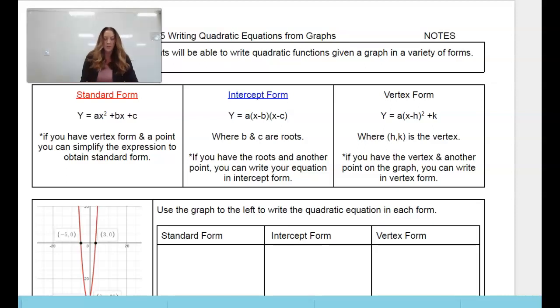So standard form, as a review, means that you have typically three terms, ax squared plus bx plus c. So if you are given the vertex and you're given a point that's on the graph, you can use this form to simplify.